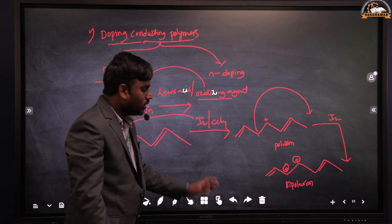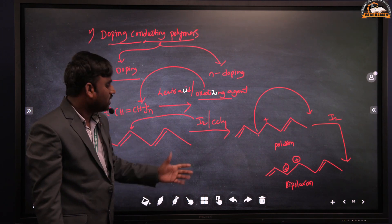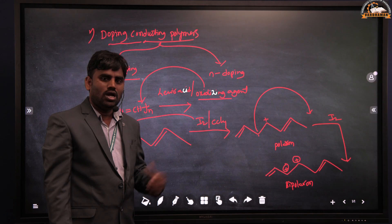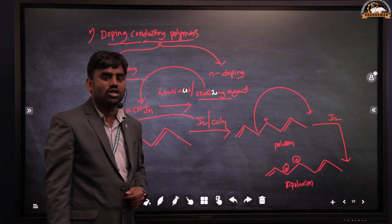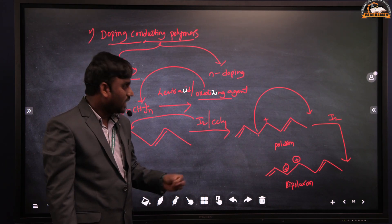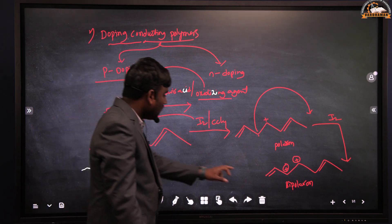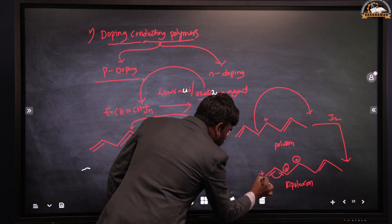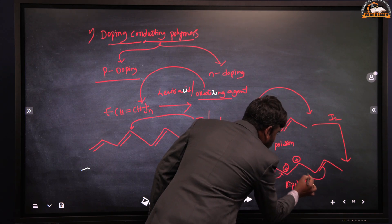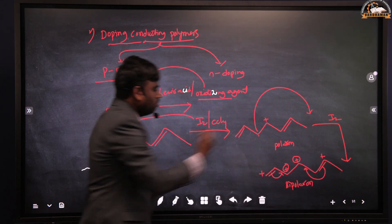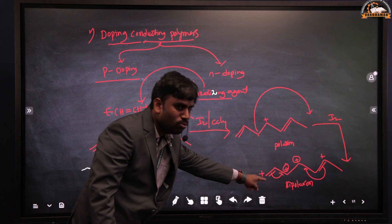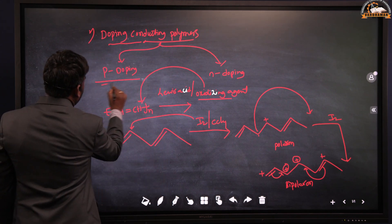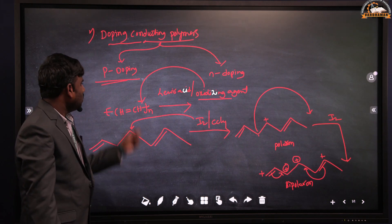How does the polymer exhibit conductance now? There are different types of conjugations: pi-pi conjugation, pi electrons with non-bonding electron conjugation, pi electrons with cation conjugation, and pi electrons with negative charge conjugation. Here we need pi electrons along with cation conjugation. The pi electrons move in one direction and the positive charge moves towards the other end — continuously, the pi electrons move throughout the backbone of the polymer chain and the polymer exhibits conductance. This is known as positive doping or p-doping conducting polymers.